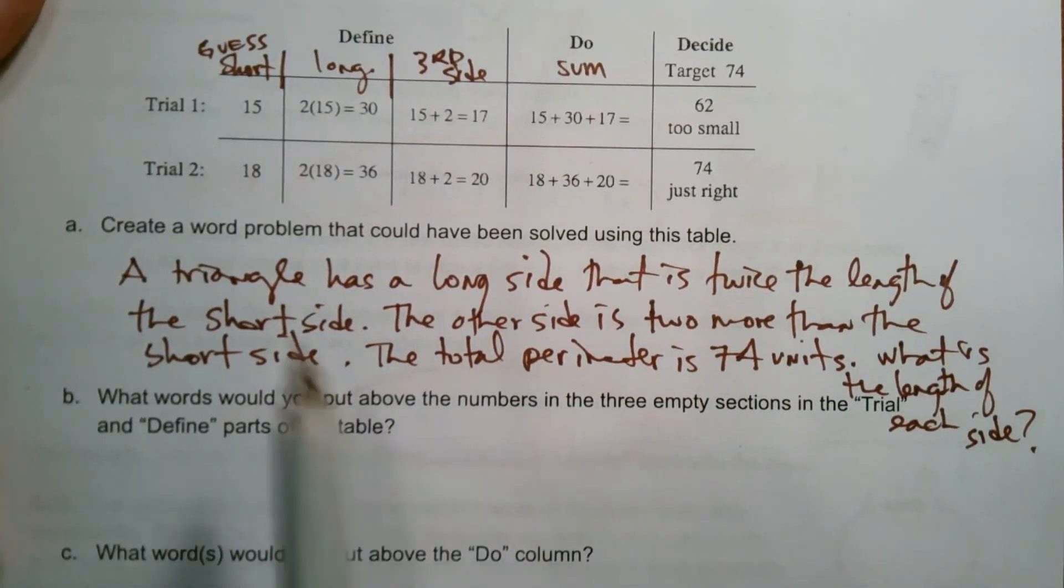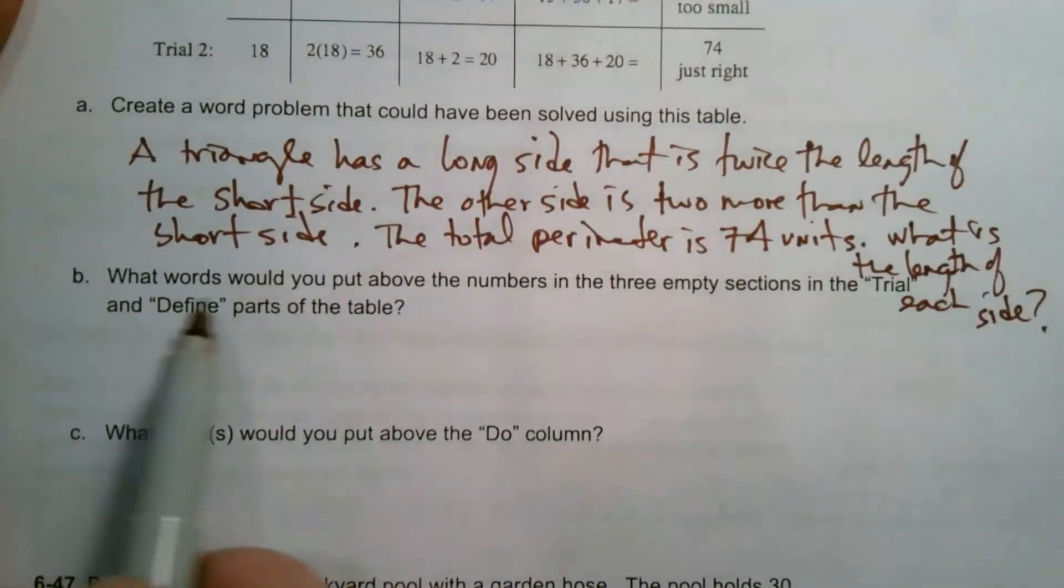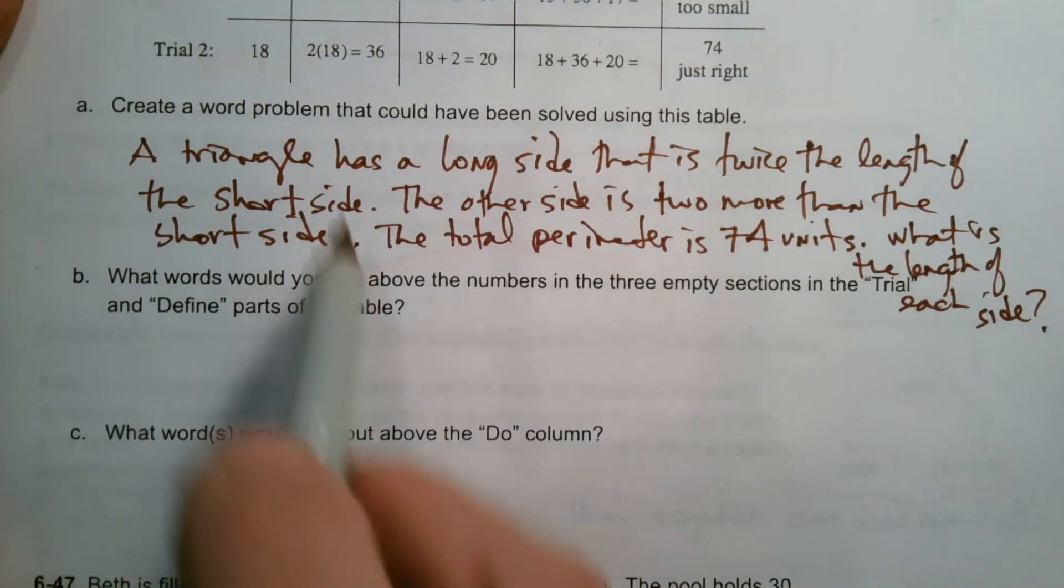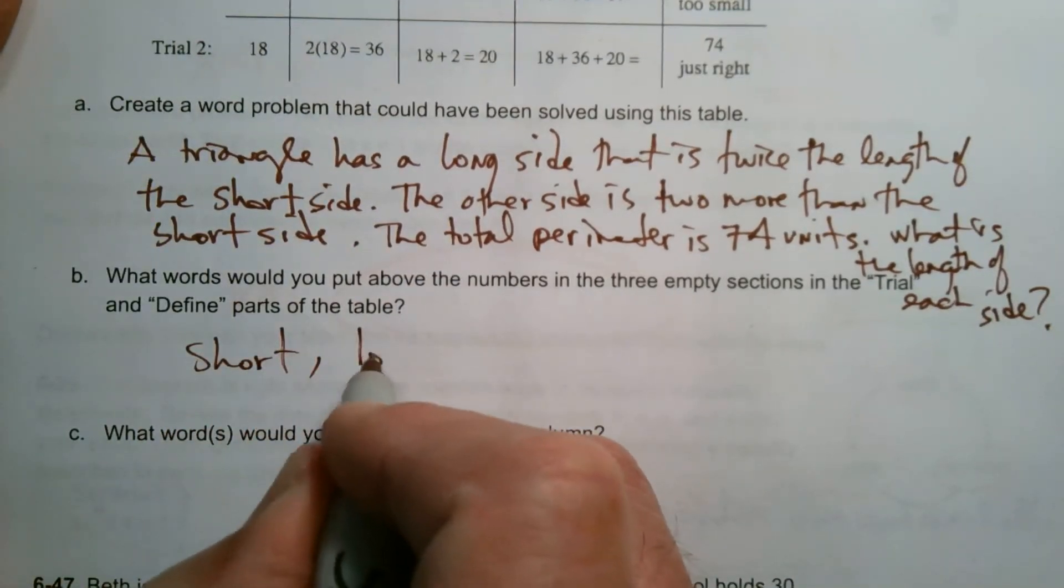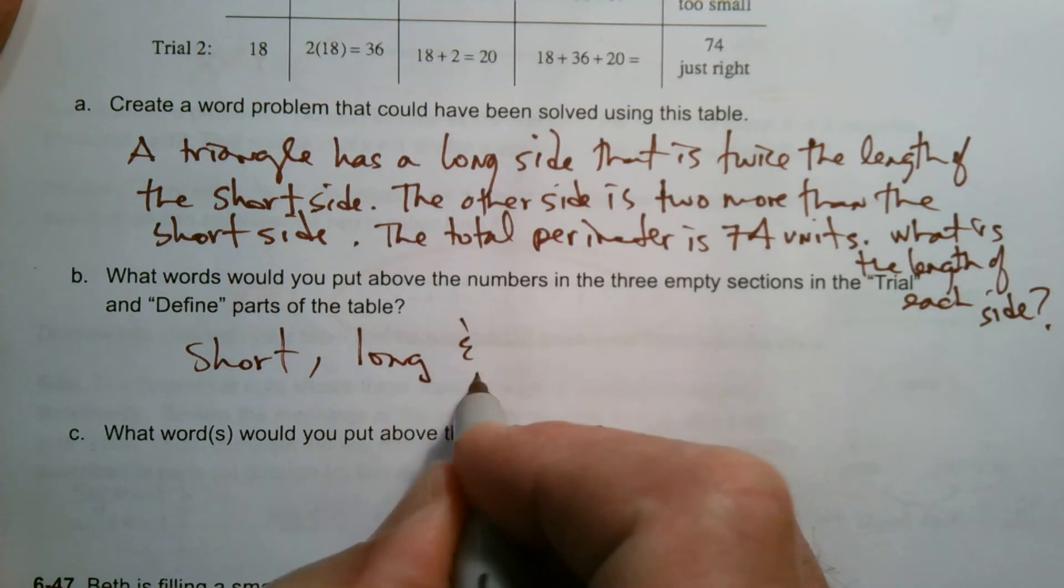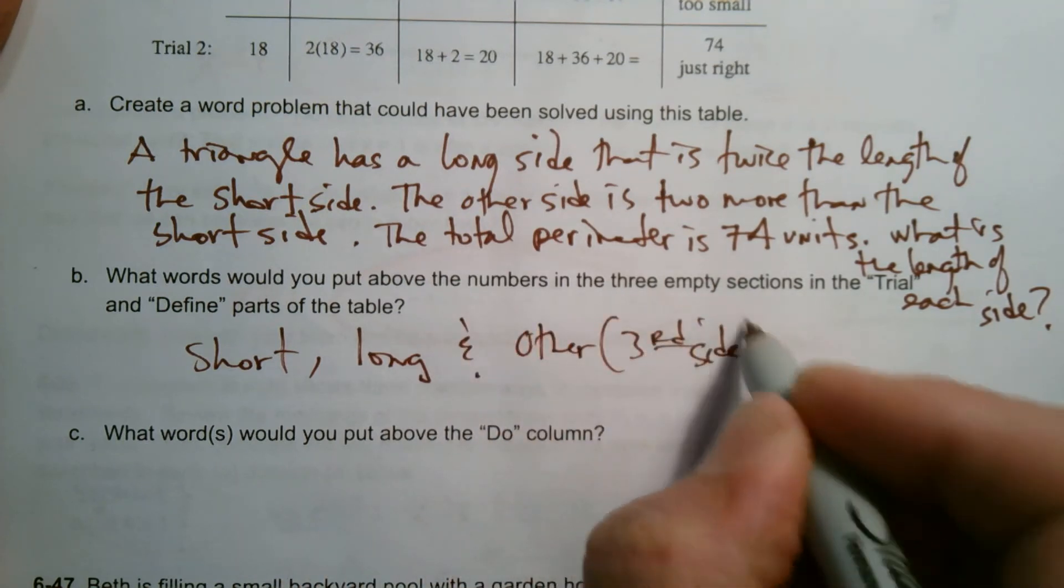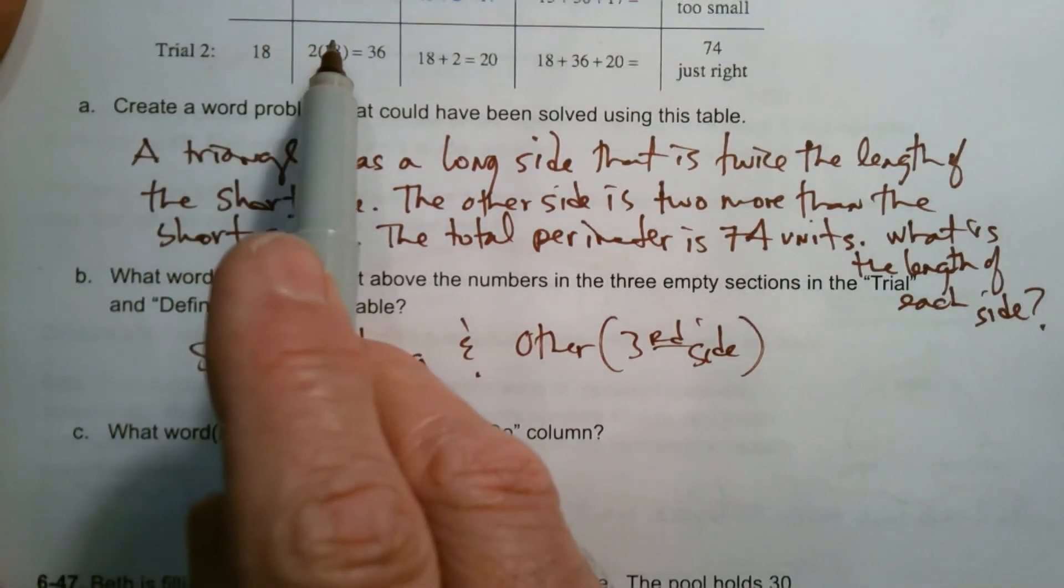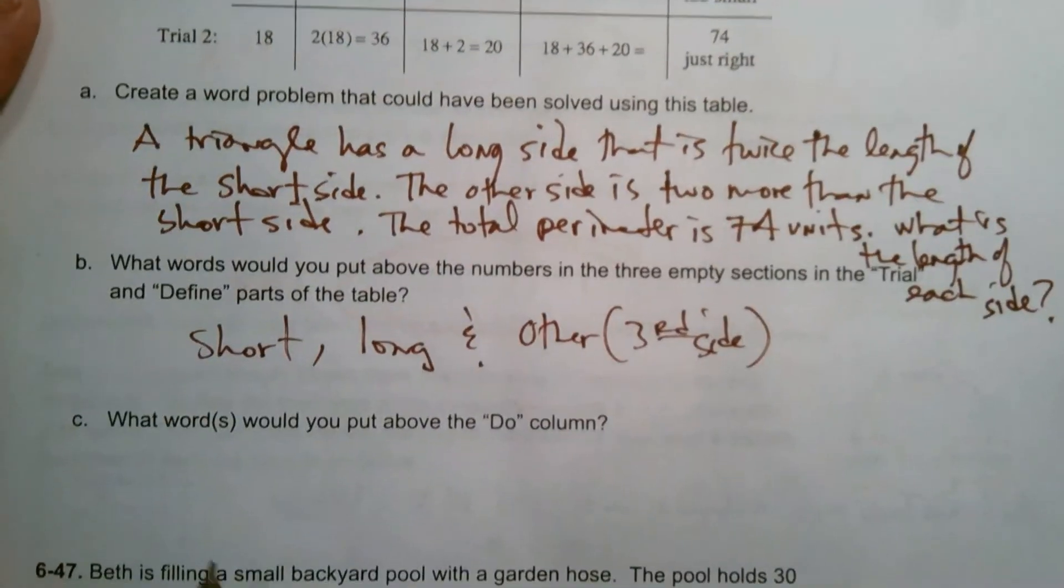And that's one example. As I said, it could be ages of people, could be other things that you would have to add up to find your answer. So what words would you put above the numbers in three empty spaces in the define parts of the table? So that's where I put the words. In this case, I put short, long, and other or third side, however you put it. I said that, but if you were doing with ages, it could be Janet and Billy and Timmy or whoever you're comparing ages with.